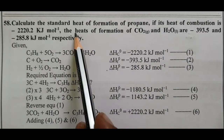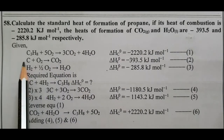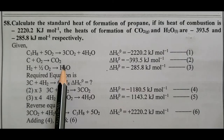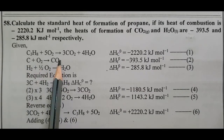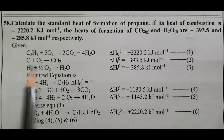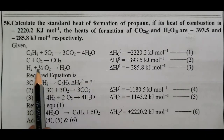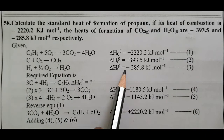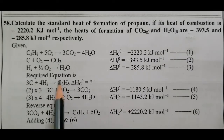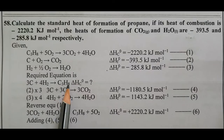Given: delta H combustion value is minus 2220.2 kilojoule mole power minus 1. Heat of formation of carbon dioxide value is minus 393.5. Formation of water: H2 plus half O2 equals H2O, value minus 285.8. We need to find the heat of formation of propane with molecular formula C3H8 using Hess's law.